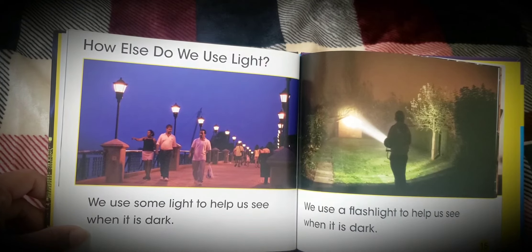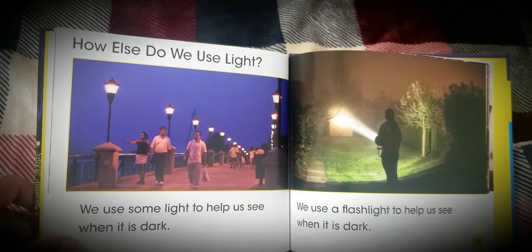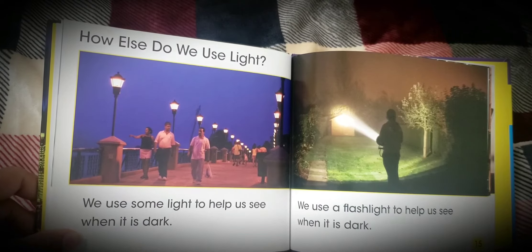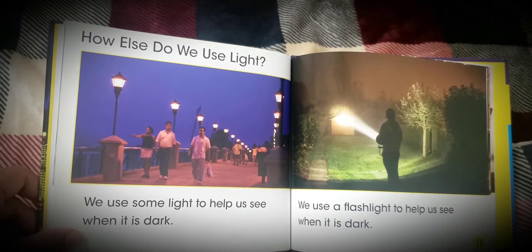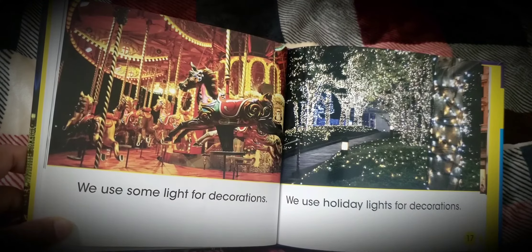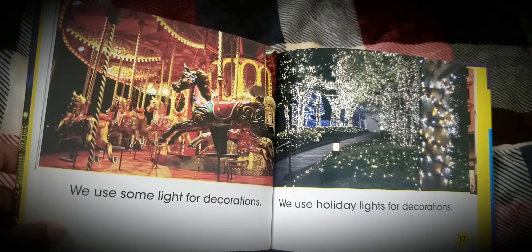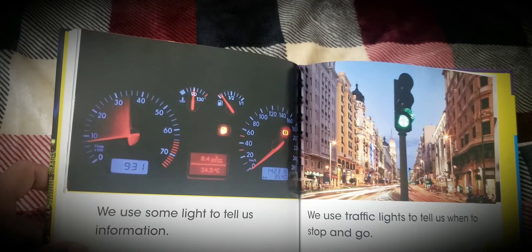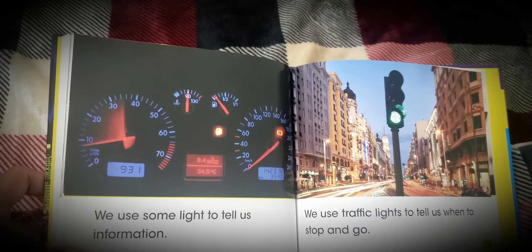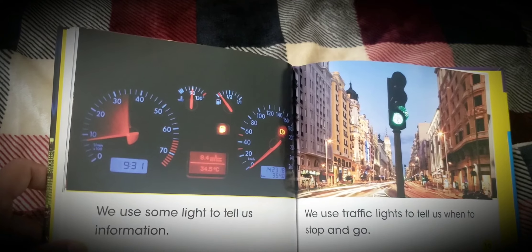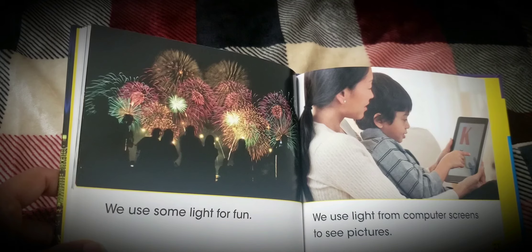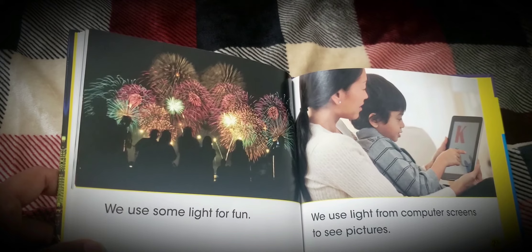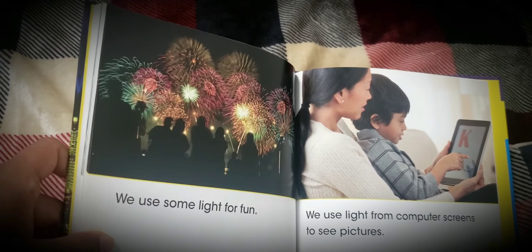How else do we use light? We use light to help us see when it is dark — we use a flashlight for that. We use some light for decorations, like holiday lights. We also use some light to tell us information, like traffic lights that tell us when to stop and go.